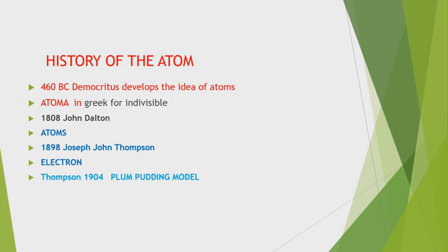In 1808, John Dalton suggested that all matter was made up of tiny spheres that were able to bounce around with perfect elasticity, and he called them atoms.